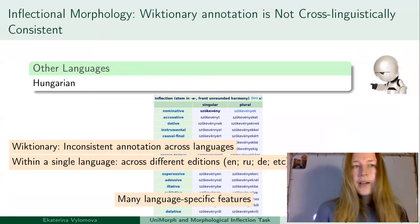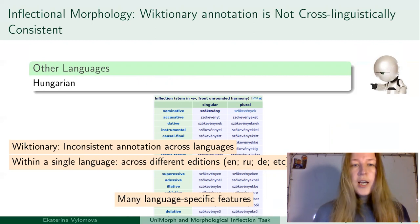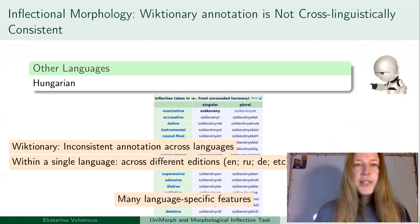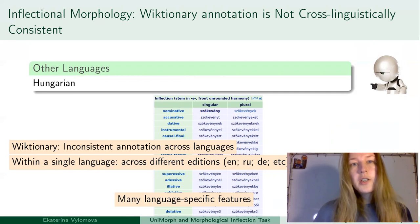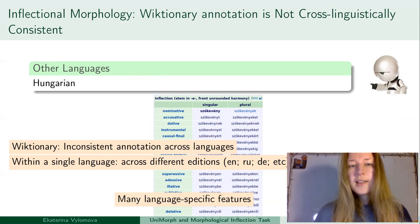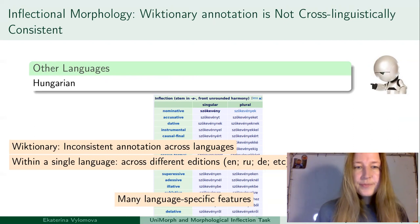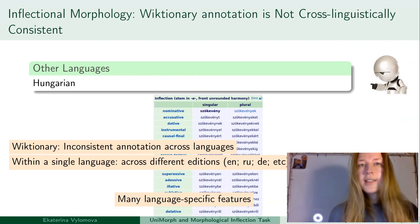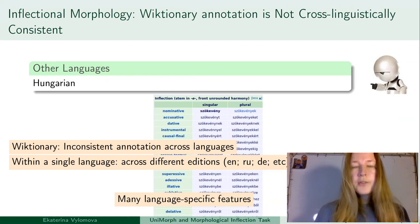If you compare to other languages such as Hungarian, Hungarian might be influenced by its own tradition of describing languages, so the grammatical case names might be slightly different. The general problem with Wiktionary is that it provides somewhat inconsistent annotation across languages, and even within a language, if we look at different editions of Wiktionary, we might see substantial differences. For each language, we might also observe many language-specific features, making it very hard to run any cross-linguistic study or create universal annotation using just this source.